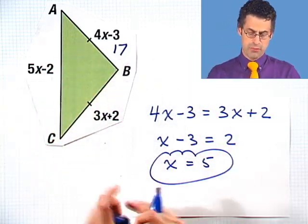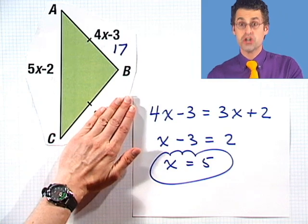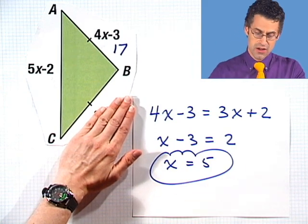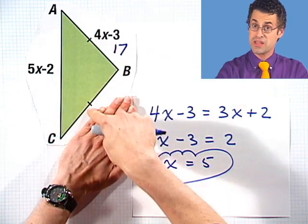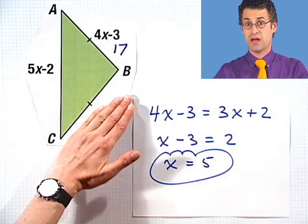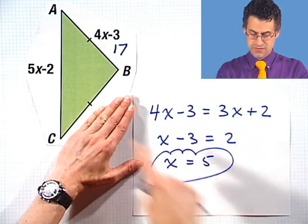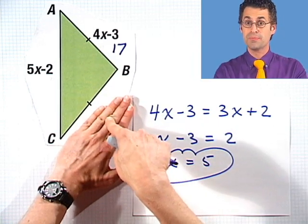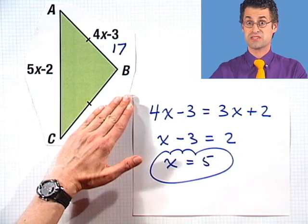Now I'm going to find this length. But without doing any work, what should it be? We can do a little mini check to see if we're right. Well, since we were told originally, and we assumed that these sides are congruent, this length should be 17 as well. If we plug in x equals 5 into whatever's under my hand, and we get something that's not 17, I know we've made a mistake.